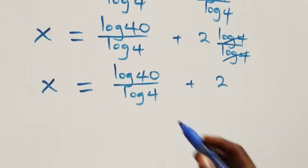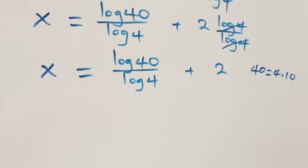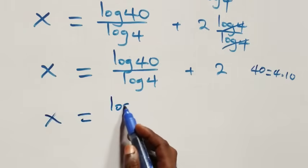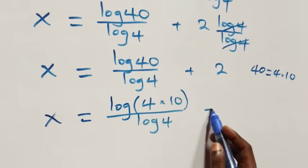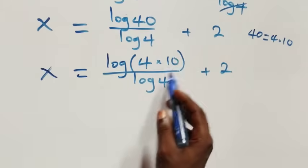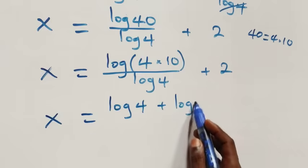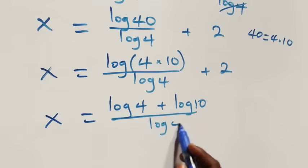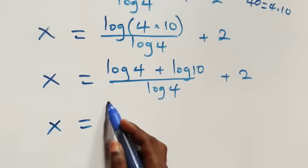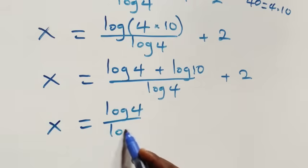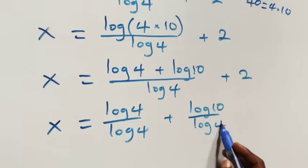Also, 40 can be expressed as 4 times 10, so what we have becomes x equals log of 4 times 10 over log 4, plus 2. We apply the law of logarithms and this becomes x equals log 4 plus log 10 over log 4, plus 2. We separate this into two fractions: x equals log 4 over log 4 plus log 10 over log 4, then plus 2.